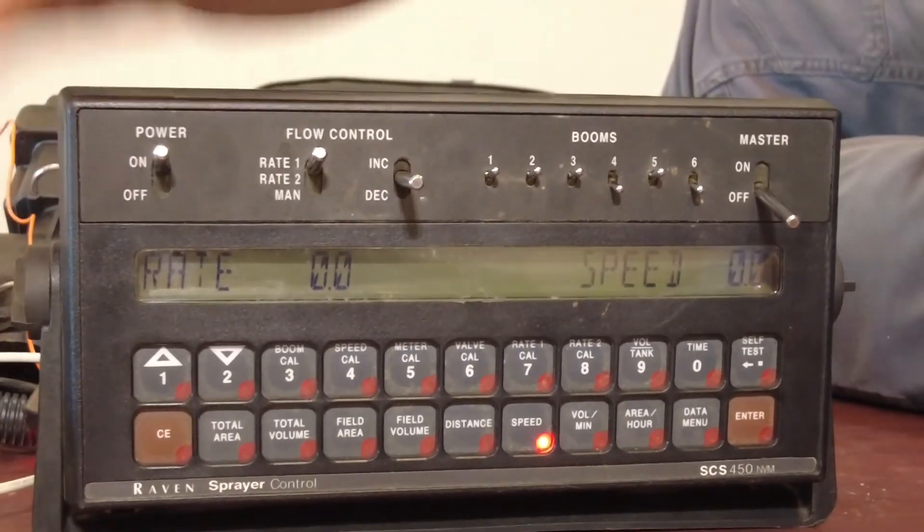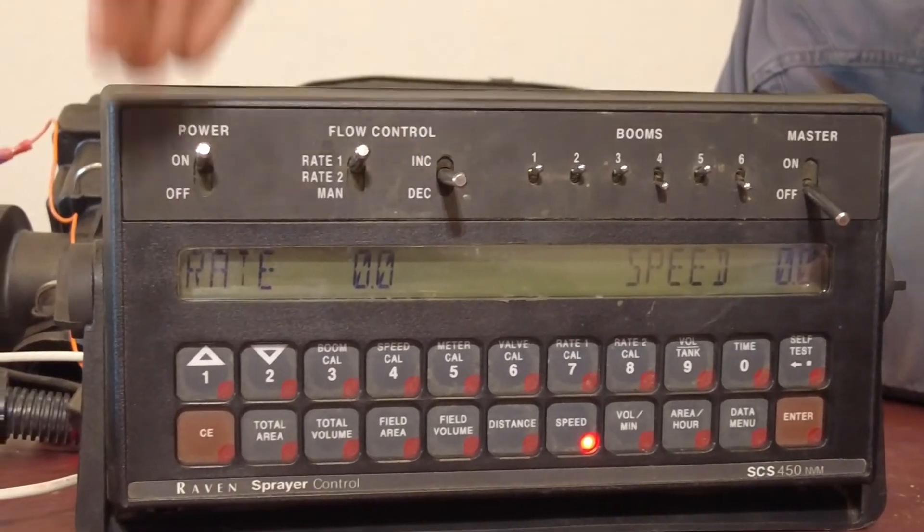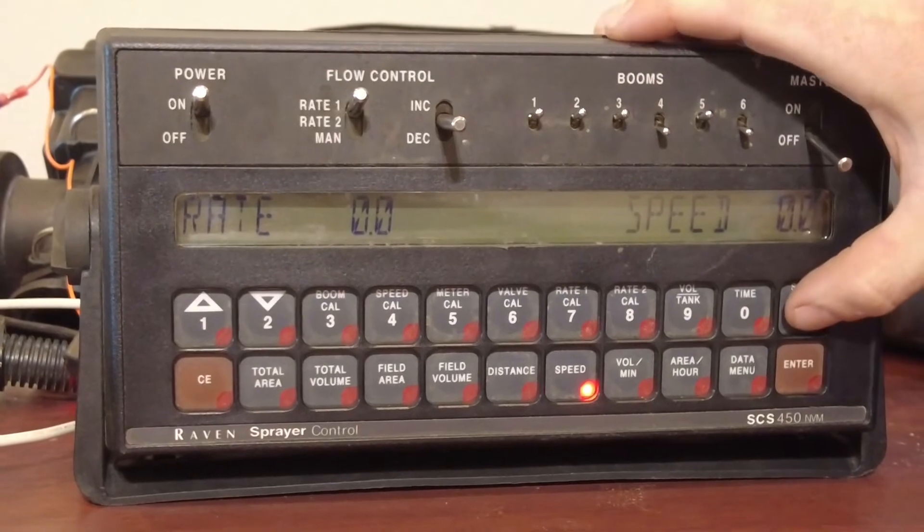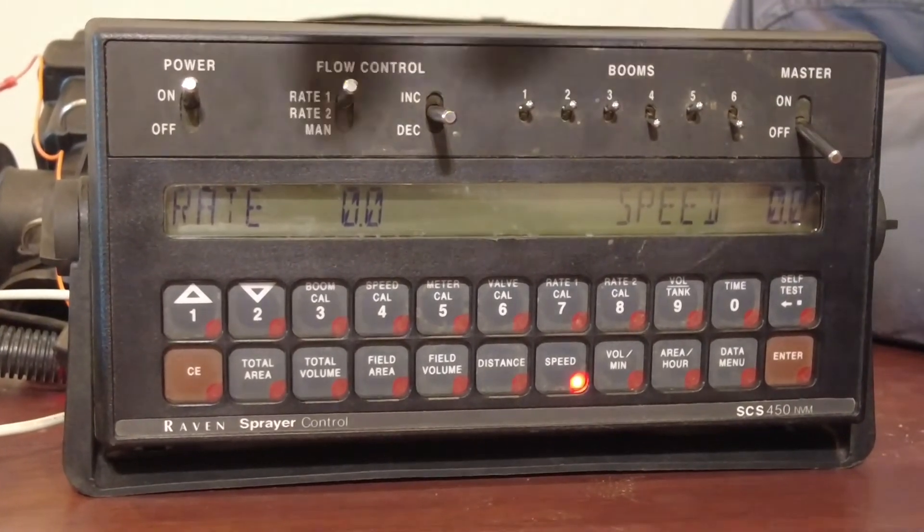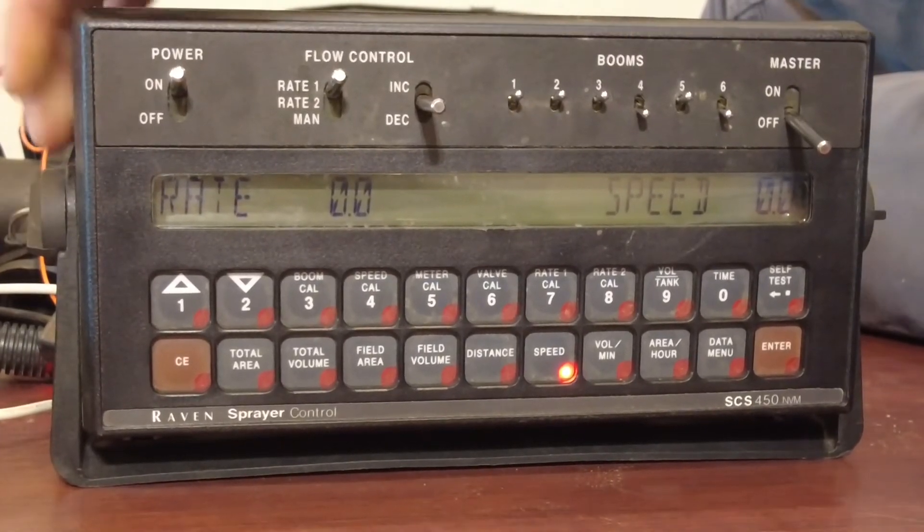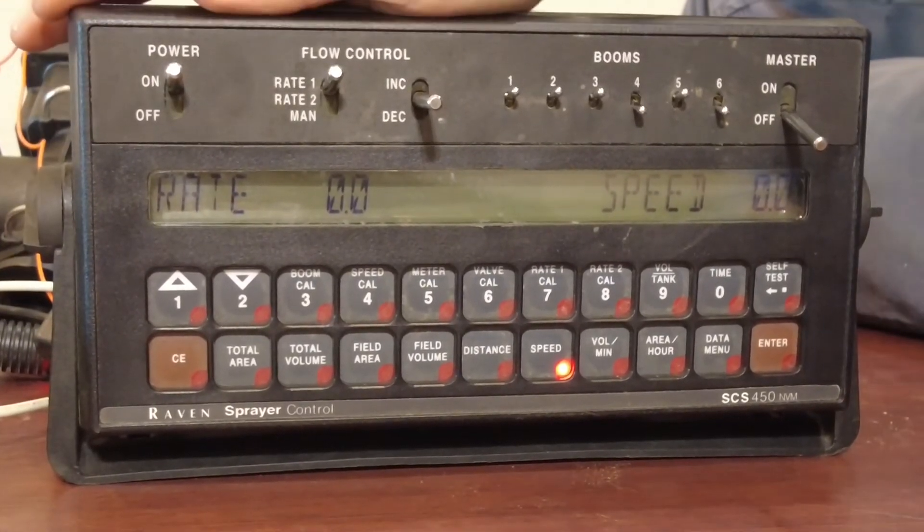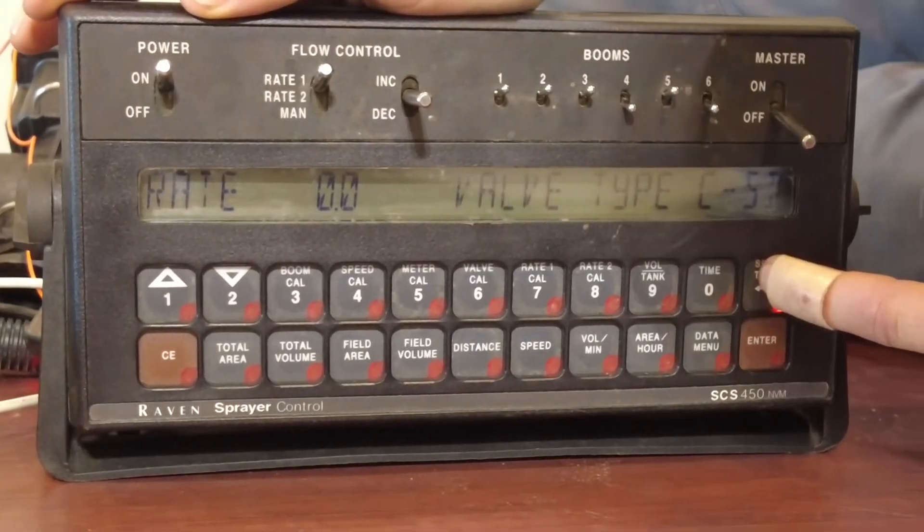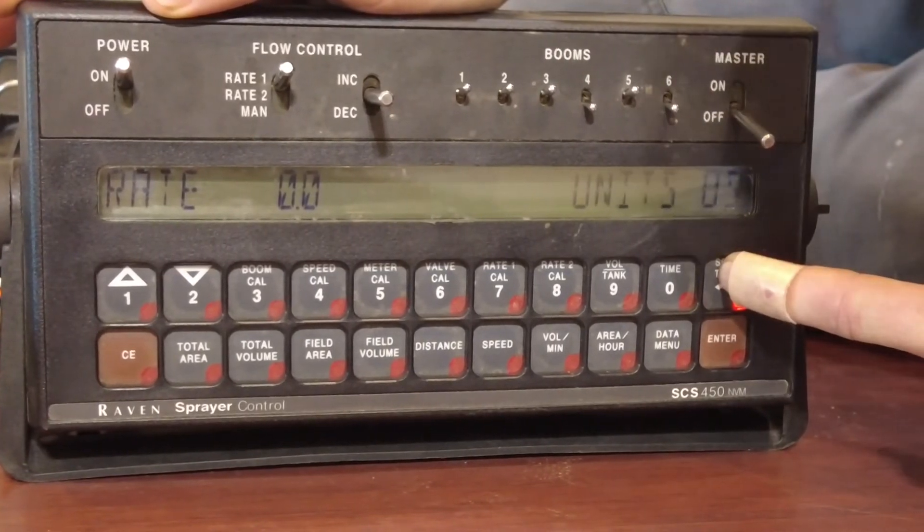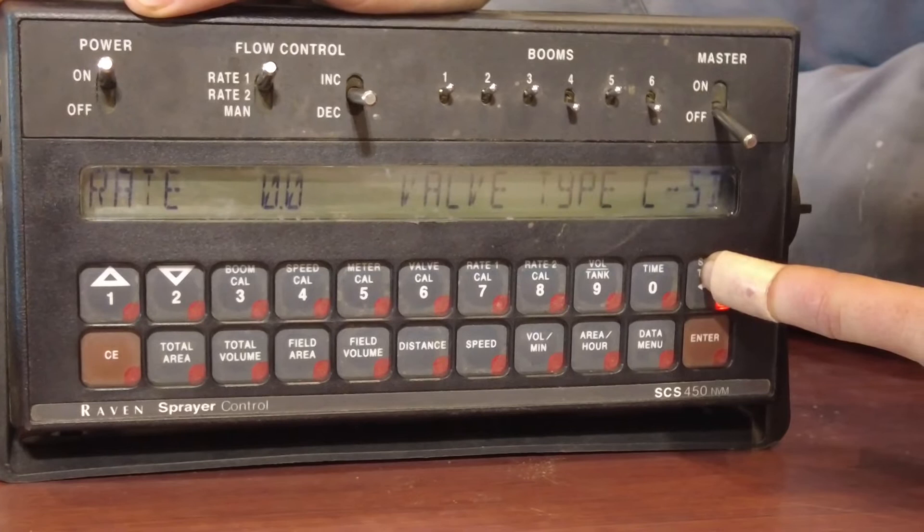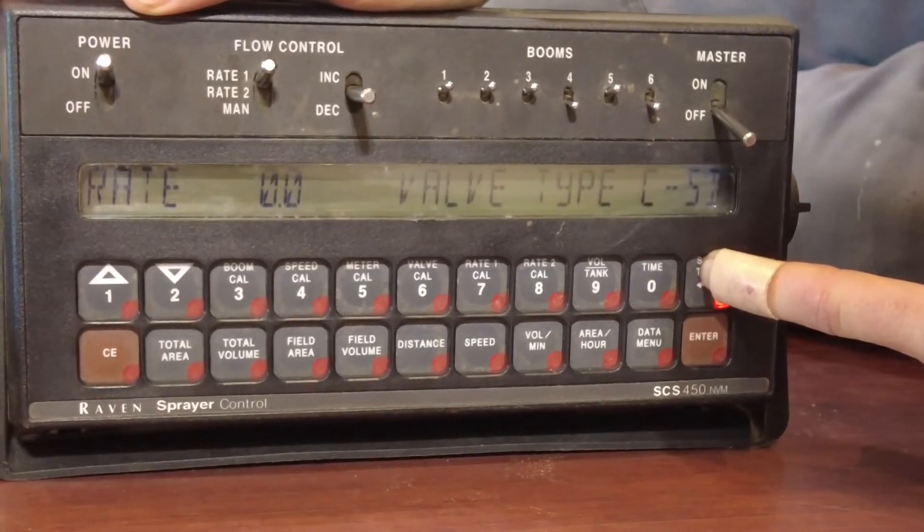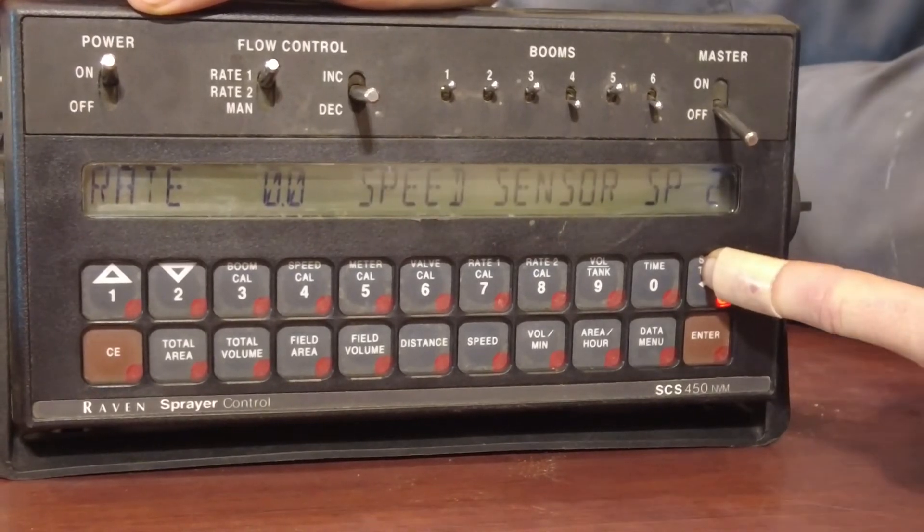Again, to start over, you would hold down on the CE and turn it on. It would erase all the settings we just did. Now there's one way that we can check our backside settings. Let's say for example, you're not sure if you entered in a standard valve or a fast valve, or if you want to check if you did a radar, you press and hold on this self test and you see that flashing on there. That is your backside settings. You did SP2, standard valve and US units. See that flashing.